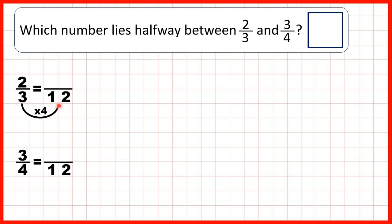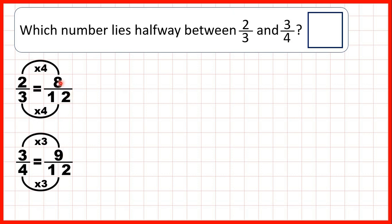Three times four is twelve, two times four is eight, four times three is twelve, three times three is nine. Now we know that right in the middle, or halfway between eight and nine, we have eight and a half, but again we can't write eight and a half over twelve as our answer because we don't usually have fractions within fractions.